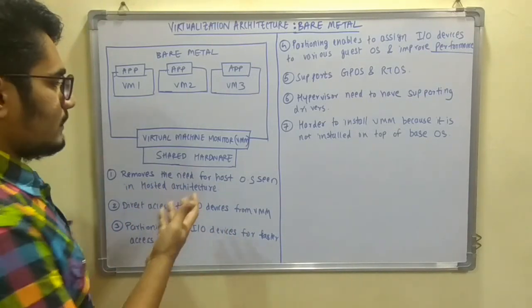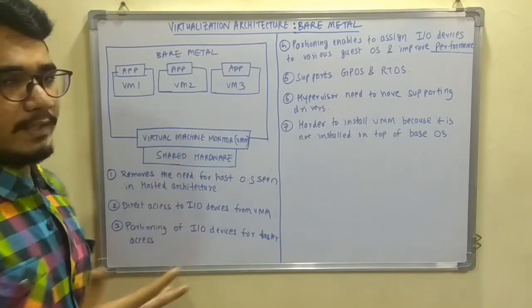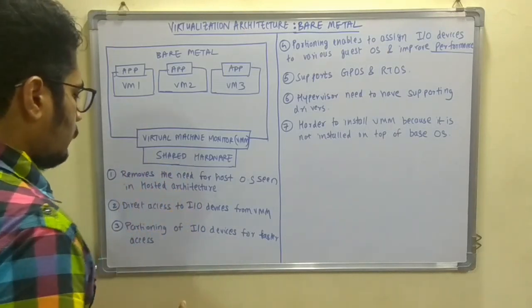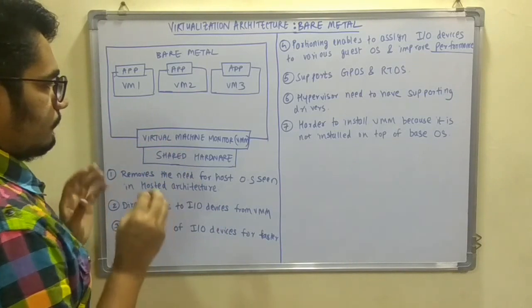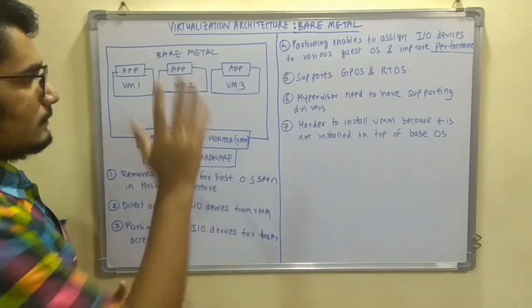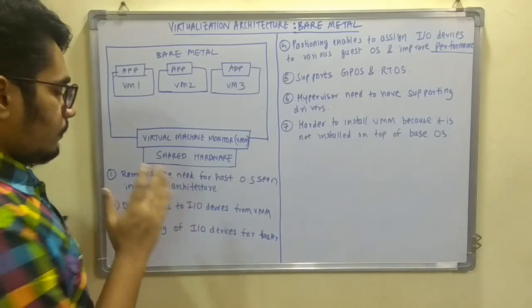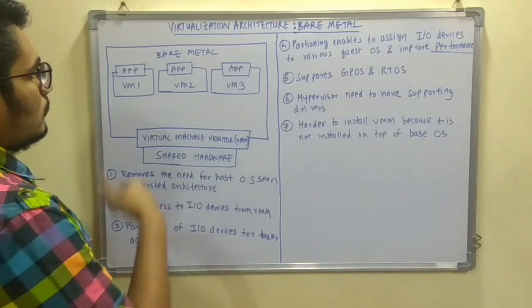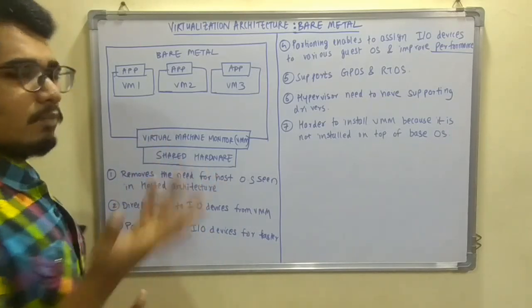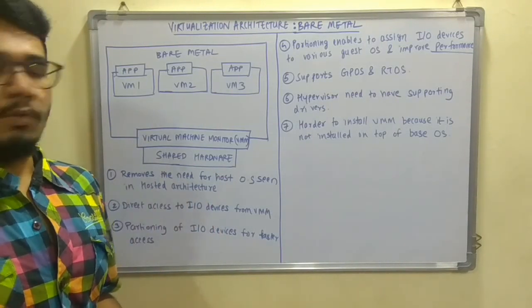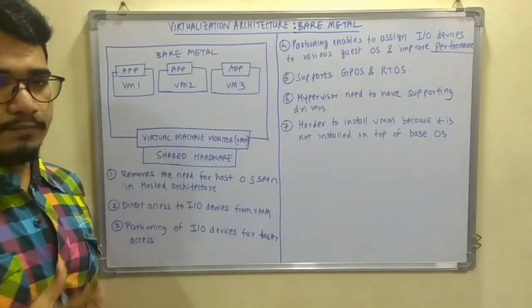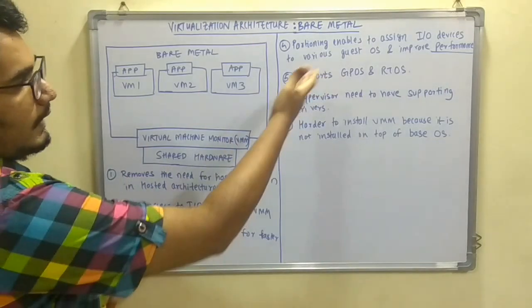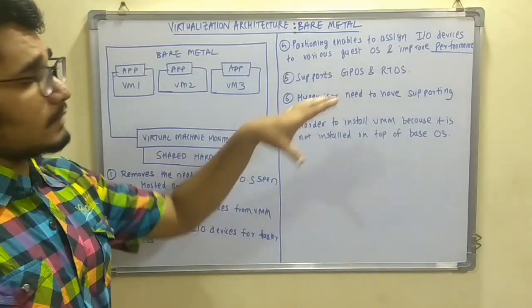Access to the IO devices can be directly from the VMM, so there is no dependency on any intermediate OS. One major advantage of the bare metal virtualization architecture is that you can do partitioning of the IO devices, meaning two or more VMs can access the same device at the same time — which was not the case in the hosted architecture.